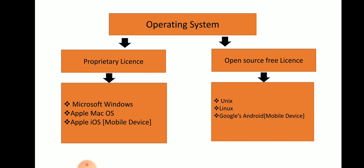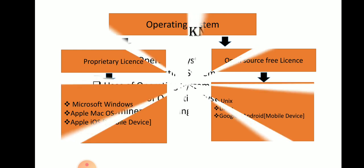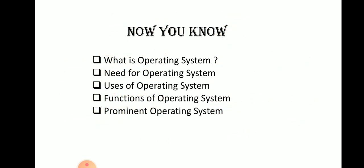Open source means free-license software. Under this we have Unix, Linux, and Google Android. Unix is a multi-user OS; Linux is a Unix-like operating system; and Google's Android is a Linux-based OS designed for mobile devices. Nowadays all smartphones run on Google's Android, except Apple devices which use Apple iOS.